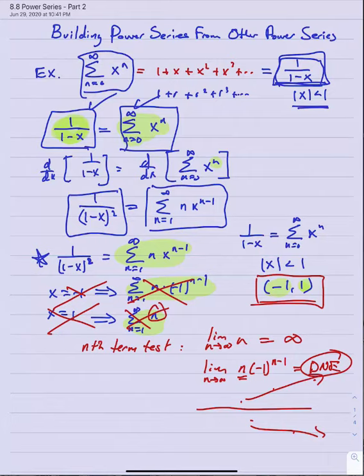So this is a basic example showing that if we're trying to find a power series for something like one over one minus x squared, if we can notice that it's the derivative of one over one minus x — which has a very simple power series — then it's simple to find the power series for one over one minus x squared. We just take the derivative.